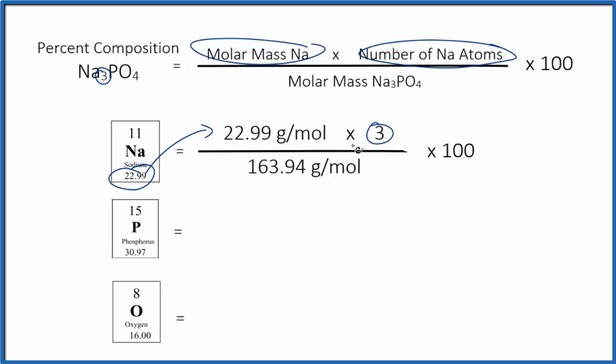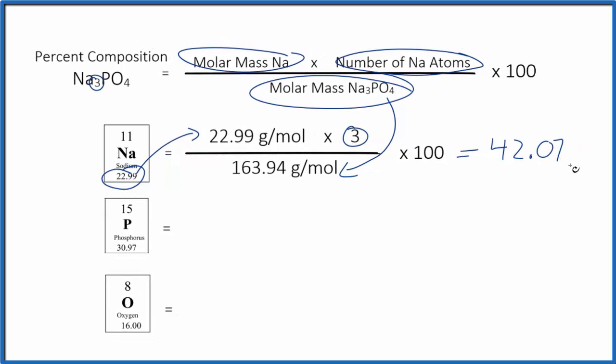We multiply, and then we'll divide by the molar mass of sodium phosphate. If you need help finding the molar mass, there's a link in the description. So we multiply the top, then we divide by the bottom, multiply by 100 to get a percent, 42.07%. That's the percent composition by mass of the sodium in sodium phosphate. We do phosphorus and oxygen the same way.